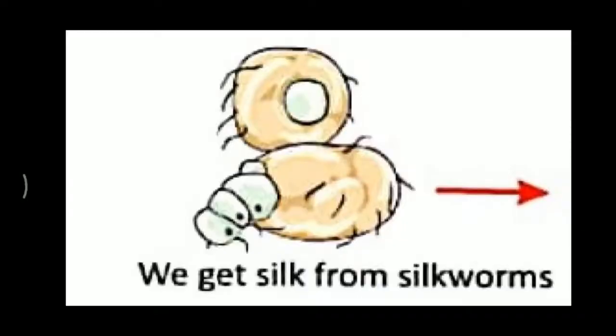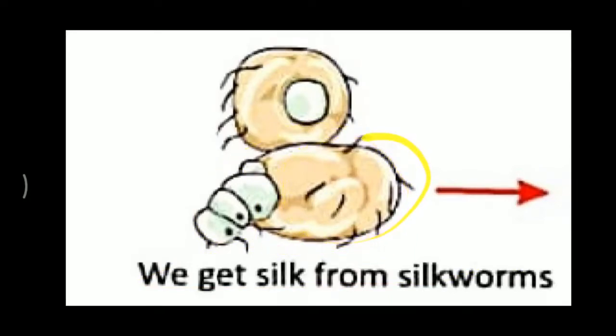We get the silk from the silkworm. What the silkworm does is it makes a covering over itself. This covering is known as a cocoon. The silkworm then gets out of it and we are left with this cocoon.